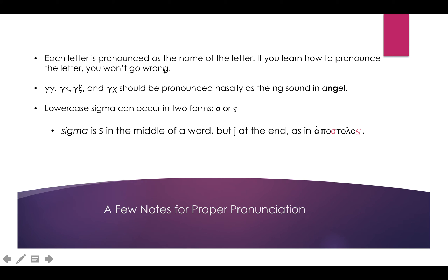As mentioned, every letter is pronounced as the name of the letter — learn to pronounce the letter and you cannot go wrong. Here we have some consonant clusters. Whenever you have a consonant cluster with a gamma, it only occurs in four letters: a gamma, a kappa, a xi, or a chi. You're going to pronounce it nasally, like the NG in 'angel.' It's not critical for you to know this — that's really about pronunciation. You're really just learning the alphabet so that you can have assistance with using Greek language tools.